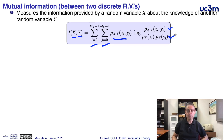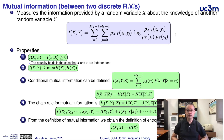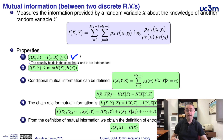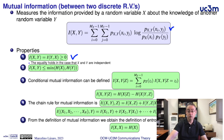Because of this definition, the mutual information has several properties. The first one is that it is a non-negative function, and it is equal to zero when the two random variables are independent. This is evident because in the logarithm we have the ratio between the joint probability and the product of the marginal probabilities, which are equal for independent random variables, and therefore we have the logarithm of one, which is zero.